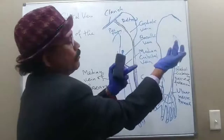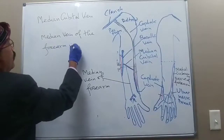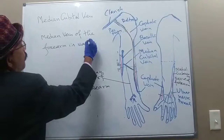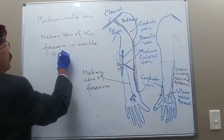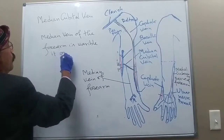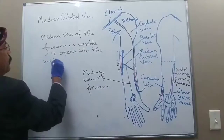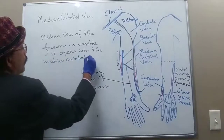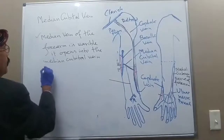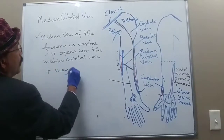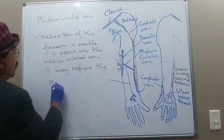The median vein of the forearm is present on the ventral aspect of the forearm, between the cephalic vein and the basilic vein. It is a very variable structure. It may open into the median cubital vein, or it may replace the median cubital vein entirely.